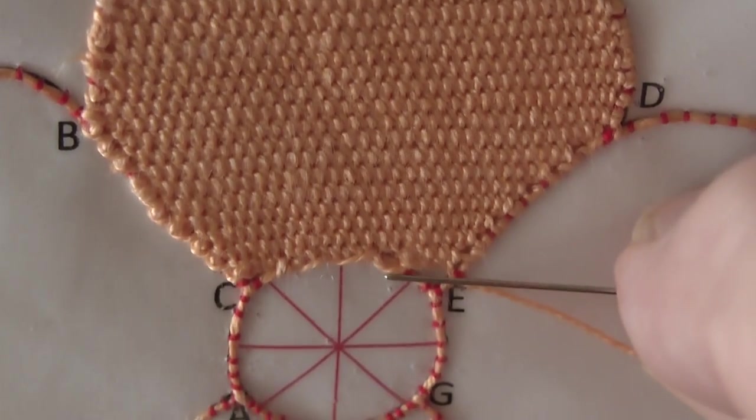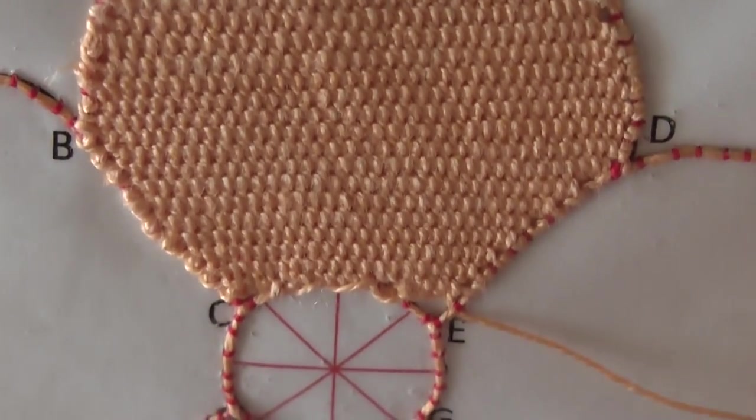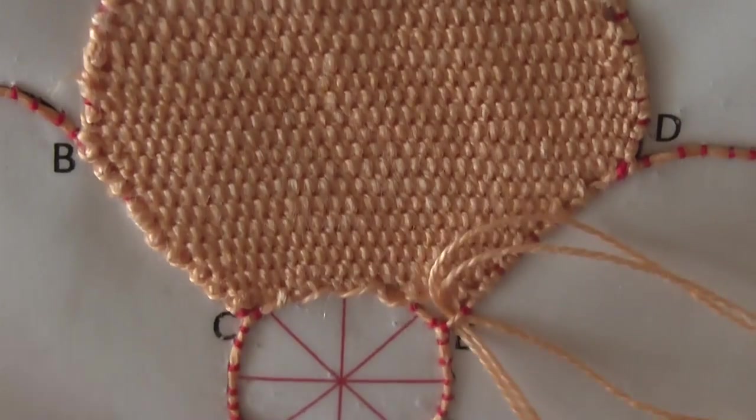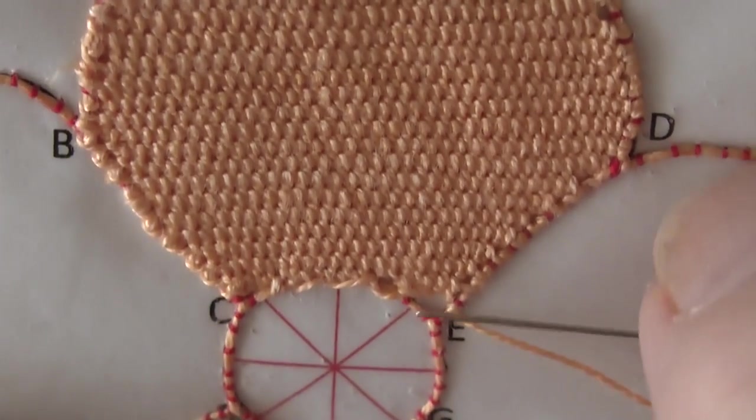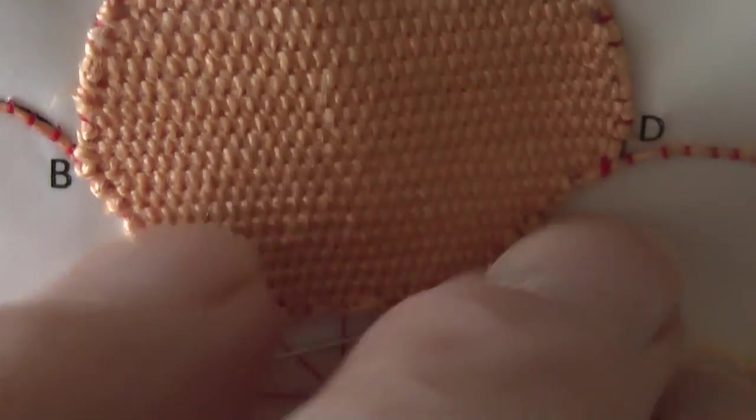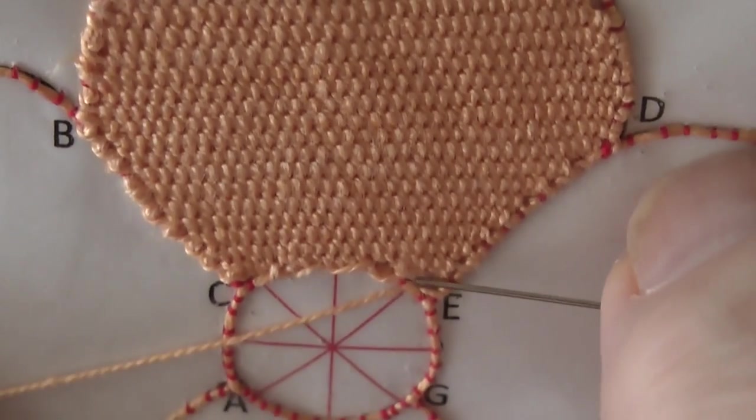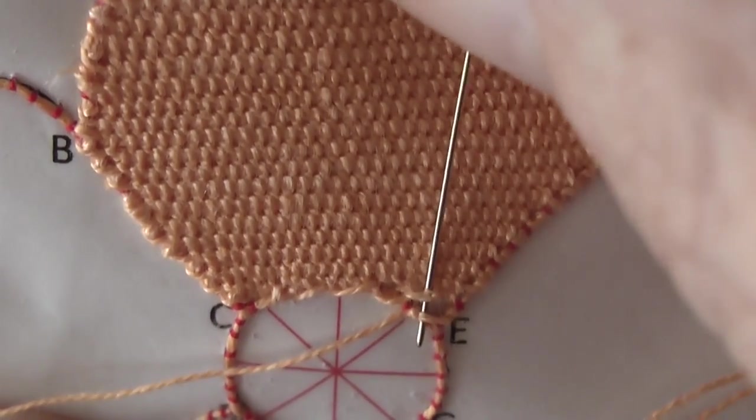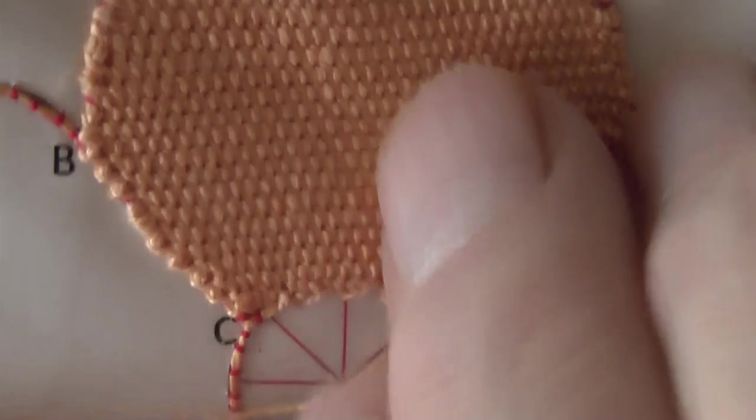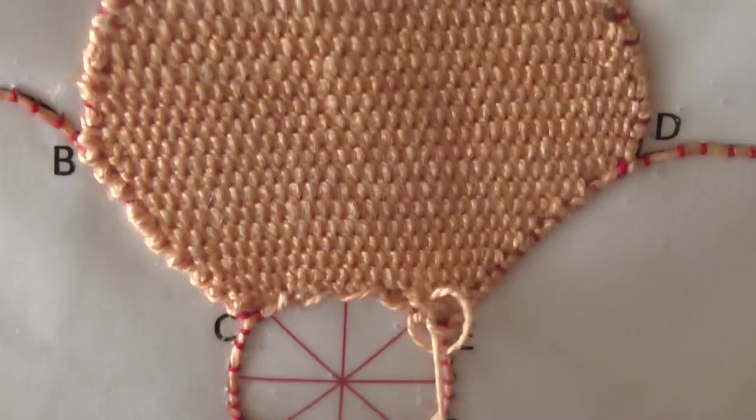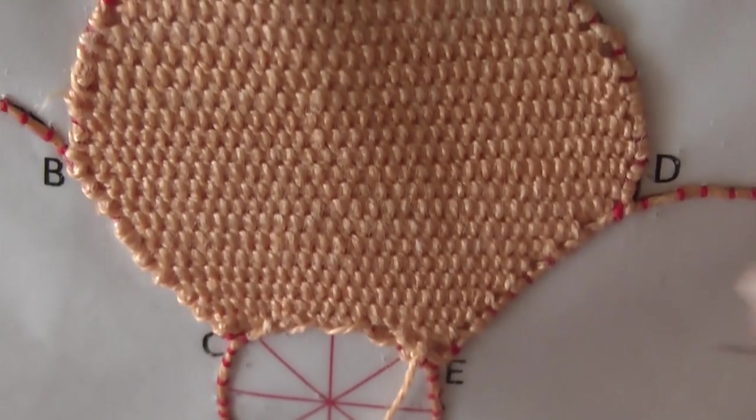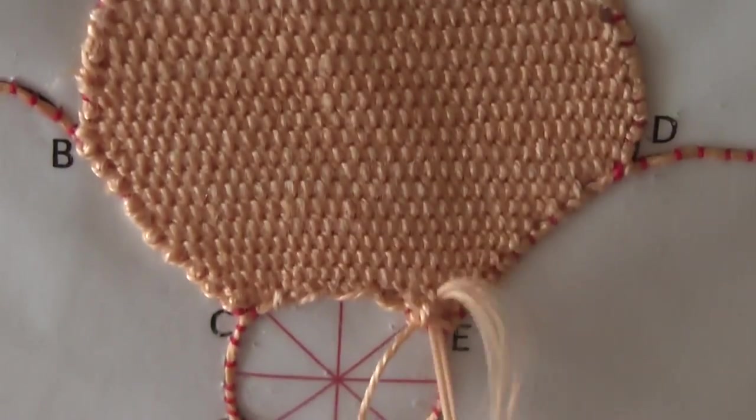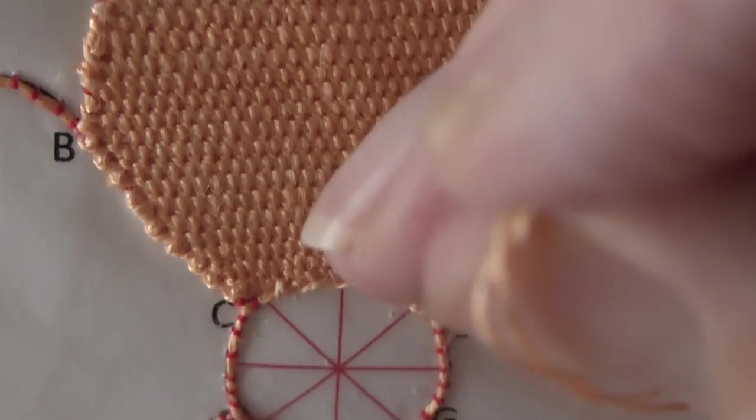Now we've still got a gap there. We can get another row of stitches across there. Double round there, lay the cord back, whip it again. So I'll probably only get two stitches in here, maybe only one. I'll get another one. And back under.